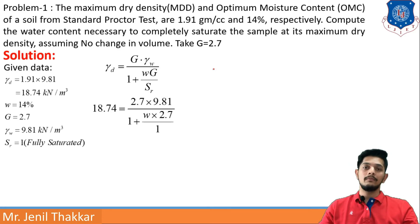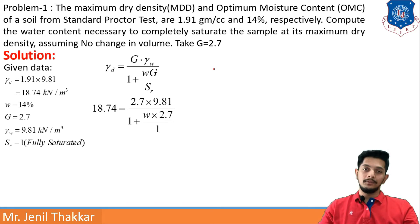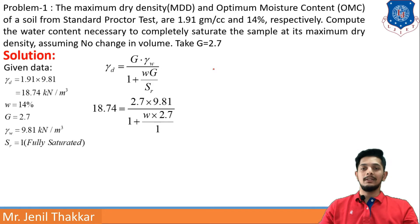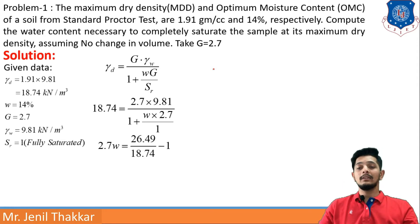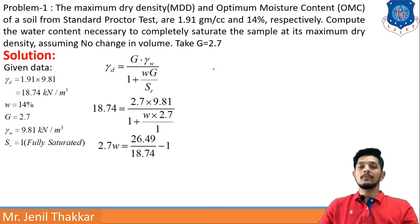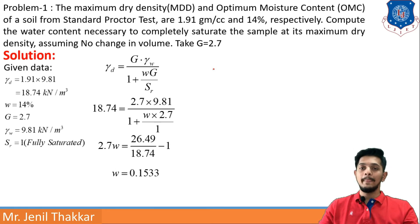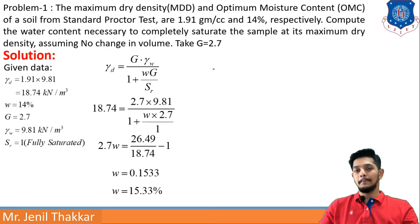Putting in the values — γd, G, γw = 9.81 — w is the unknown water content, and I set Sr = 1 for fully saturated. Solving the equation: 2.7w = 26.49/18.74 − 1, giving w = 0.1533, so water content = 15.33%.